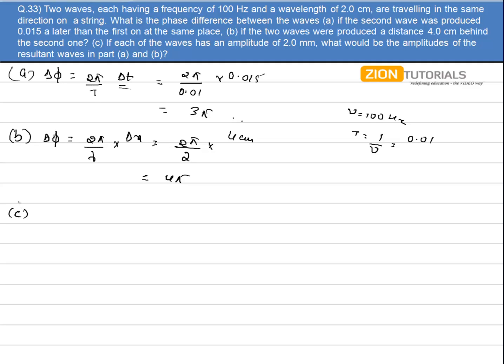In part C, if each of the wave has an amplitude of 2 mm, what would be the amplitude of the resultant waves in part a and in part b?